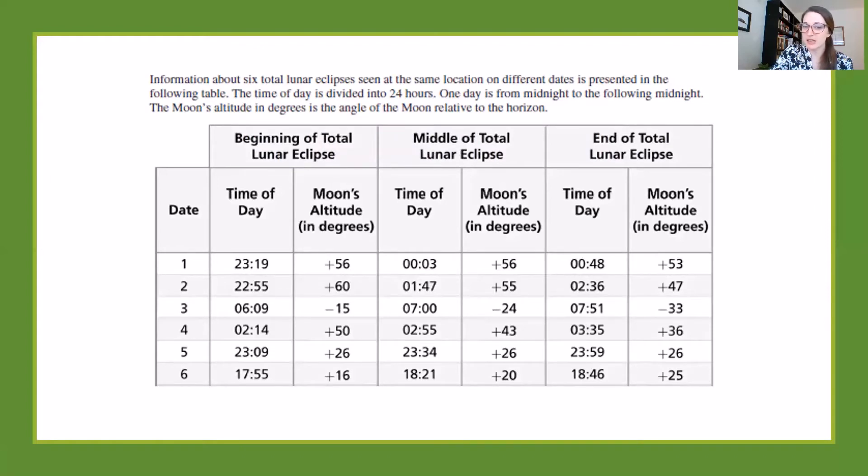the altitude in degrees, and then we have a beginning, middle, and end section. Now instead of taking time to try to memorize all this information or read every line, it's best for me to figure out what they're talking about on this table and then look at the questions to find out what specifically they want me to analyze about this information.